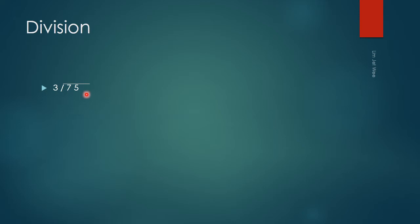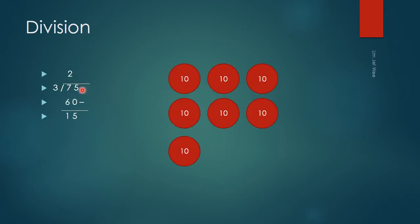The first thing they look at is which position we are going to deal with. This is the ones position and this is the tens position. We're dealing with the tens position first. The 7 is actually in the tens position, so we need to group the tens in groups of 3.